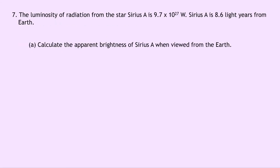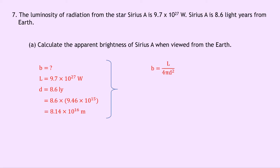Question 7 says the luminosity of Sirius A is 9.7 times 10 to the 27 watts, and Sirius A is 8.6 light years from earth. Part A asks to calculate the apparent brightness of Sirius A. We know L is 9.7 times 10 to the 27 watts. Converting d: 8.6 times 9.46 times 10 to the 15 gives 8.14 times 10 to the 16 meters. Using b equals L over 4 pi d squared: 9.7 times 10 to the 27 divided by 4 pi times 8.14 times 10 to the 16 squared gives 1.2 times 10 to the minus 7 watts per meter squared.